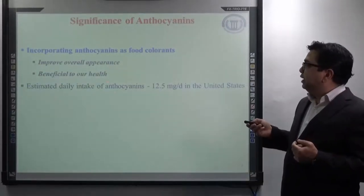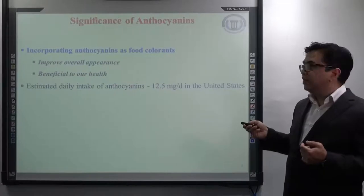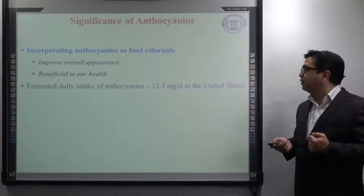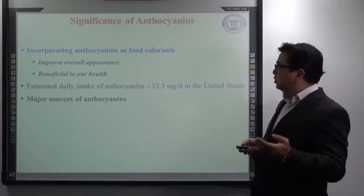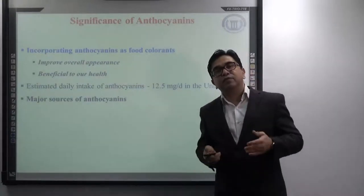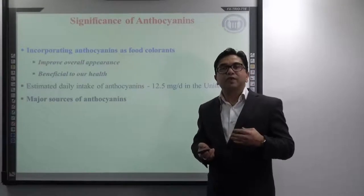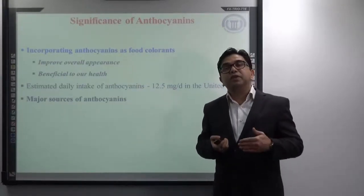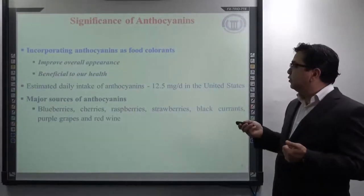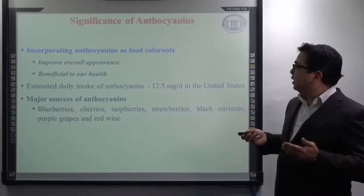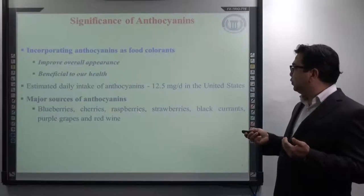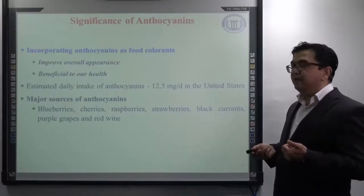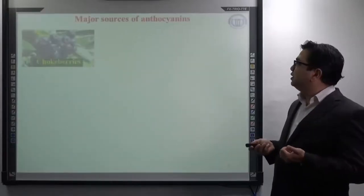An estimated daily intake of anthocyanins in the US is found to be around 12.5 mg per day. Regarding the major sources of anthocyanins, various fruits and vegetables contain anthocyanins. Mainly, anthocyanins are found in heavy quantities in blueberries, cherries, raspberries, strawberries, black currant, purple grapes, and red wines.